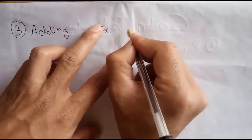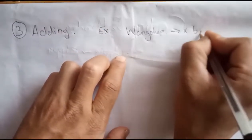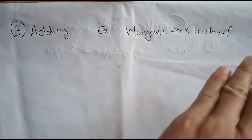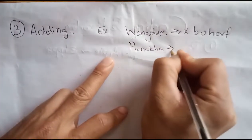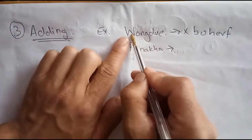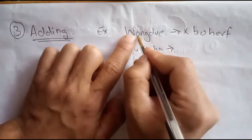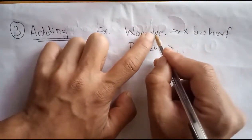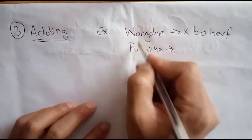For example, if the place name WANGDUI was coded as XBOHEVF, how will PUNAKHA be coded? We need to check whether the letters are being added. W is shown as X, A as B, N as O, G as H, D as E, U as V, and E as F — so each letter is incremented by 1. This is the adding method.